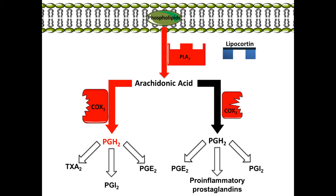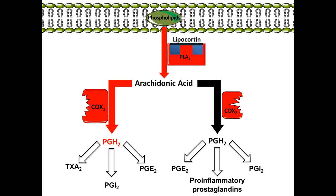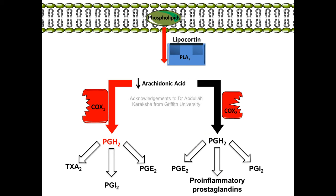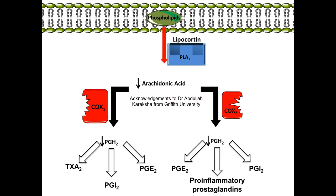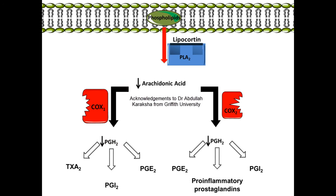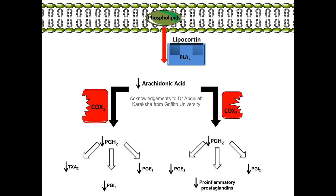Lipocortin inhibits phospholipase A2 enzyme and prevents the liberation of arachidonic acid from the membrane phospholipids. This reduces the production of prostaglandins and thromboxane A2.